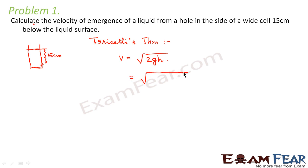So we will say root over 2 into g is acceleration due to gravity, that is 9.8 meter per second square, and h is 15 cm, so 15 into 10 to the power minus 2 meters. So this comes out to be 1.7 meter per second.